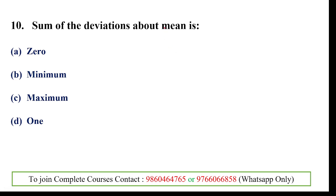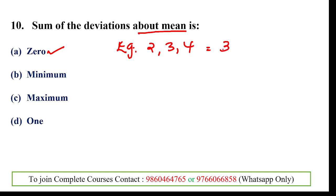Next question: sum of the deviations about the mean is zero. As shown in the previous example with observations 2, 3, 4 — mean = 3, deviations are −1, 0, +1, and their sum = 0.